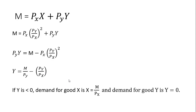One final note: if y happens to be negative, that's not possible. In that case, the demand for good x will simply be income divided by the price of good x, and the demand for good y will just be zero. I hope you found this video helpful.